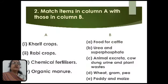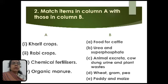The next question is matching. You have to match the words in column A with those in column B. The first word in column A is kharif crops. Kharif crops will match with paddy and maize. Kharif crops are those crops which grow in the rainy season.